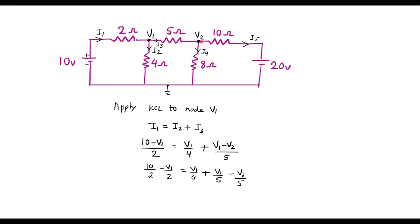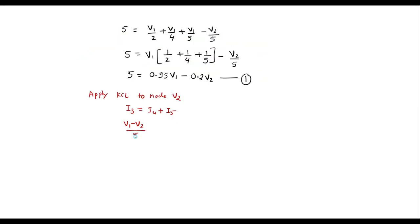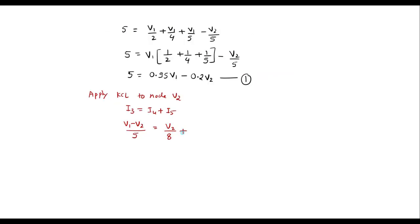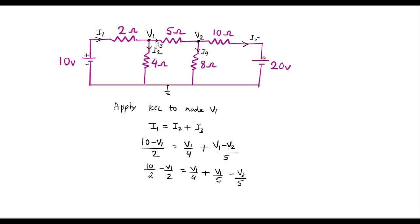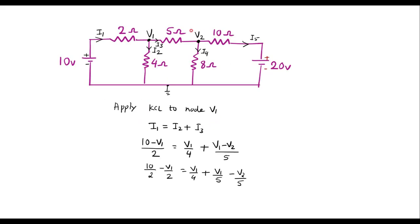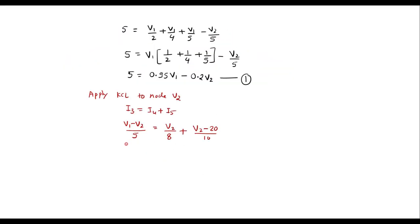I3 flows from V1 towards V2, so I3 = (V1 − V2) / 5. I4 is the current moving from V2 towards the reference node, so I4 = V2 / 8. I5 flows from V2 towards the 20 V source, so I5 = (V2 − 20) / 10. Therefore: (V1 − V2)/5 = V2/8 + (V2 − 20)/10.